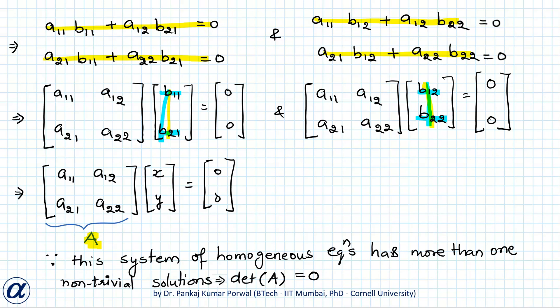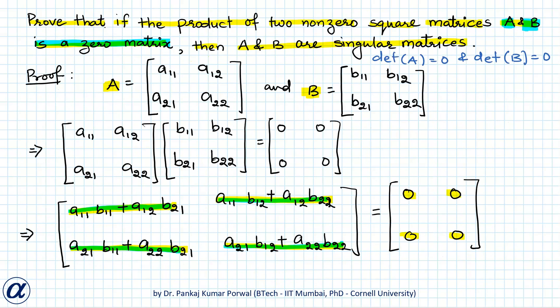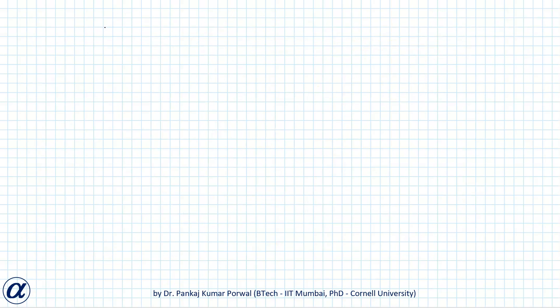So determinant of A is zero. Now, in this proof we started with the property that the product of A and B was a zero matrix and we proved that determinant of A was zero. In the same way, if we know that the product of A and B is zero matrix, then if I take transpose on both sides, this will prove that B transpose into A transpose will be a zero matrix.